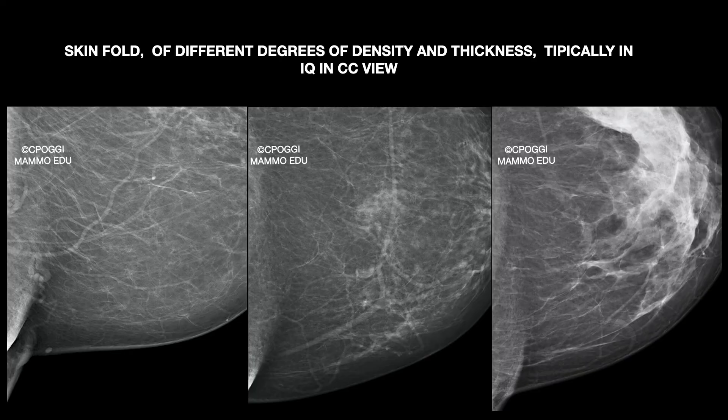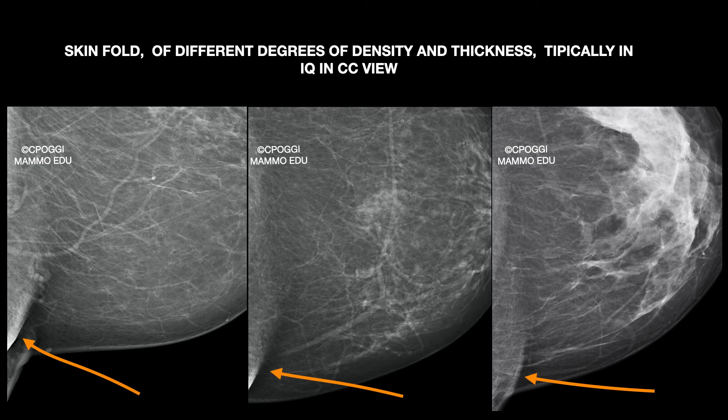Folds in the inner quadrant are usually correlated to the patient's specific anatomy of the cleavage and also to the degree of ptosis. They are more difficult to remove than those in the outer quadrant. However, this portion is very important, so we should take extra care with the position of the contralateral breast and check if the IMF is free from faults. The two artifacts usually occur together.